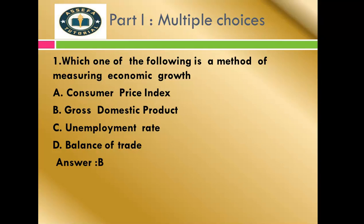The options are: A) Consumer price index, B) Gross domestic product, C) Unemployment rate, D) Balance of trade. Consumer price index measures average price level of commodity. Unemployment rate measures unemployment rate. Balance of trade measures trade. The correct answer for this question is Gross domestic product — B, gross domestic product.